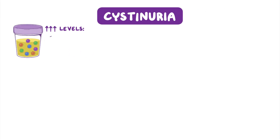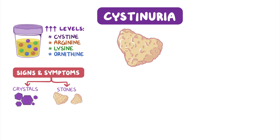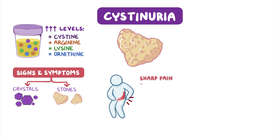While high levels of cysteine, arginine, lysine, and ornithine in the urine are characteristics of the disorder, the main signs and symptoms are caused only by the cysteine crystals and stones. As they stick together and grow larger, they form lemon-yellow stones. Stones are jagged and can cause sharp pains in the sides and lower back that can radiate to the lower abdomen and groin when they cause obstruction of the ureters.